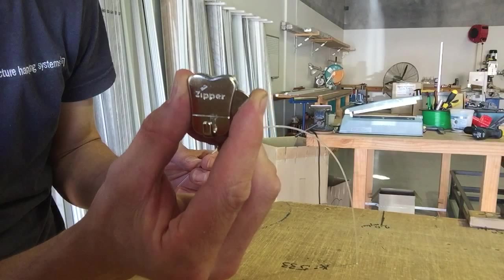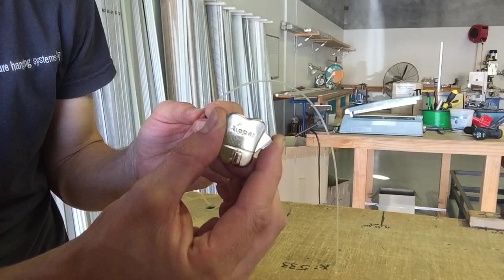So this is called the zipper hook or the HZ. It holds 10 kilos on the nylon hanger or 15 kilos on the steel.